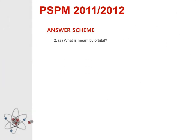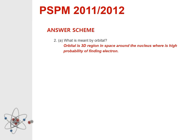Question 2a: What is meant by orbital? The answer is: an orbital is a 3D region in space around the nucleus where there is a high probability of finding an electron.